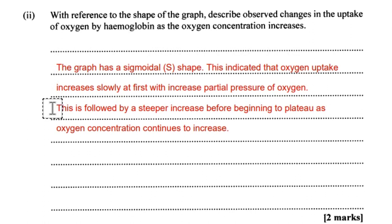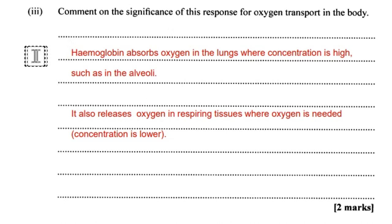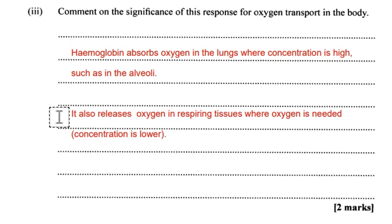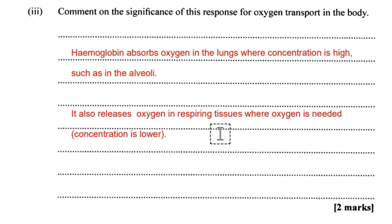Part 3: comment on the significance of this response for oxygen transport in the body. Haemoglobin absorbs oxygen in the lungs — in the alveoli — where partial pressure is high, and releases oxygen where partial pressures are low and oxygen is needed, such as in respiring tissues like muscles.